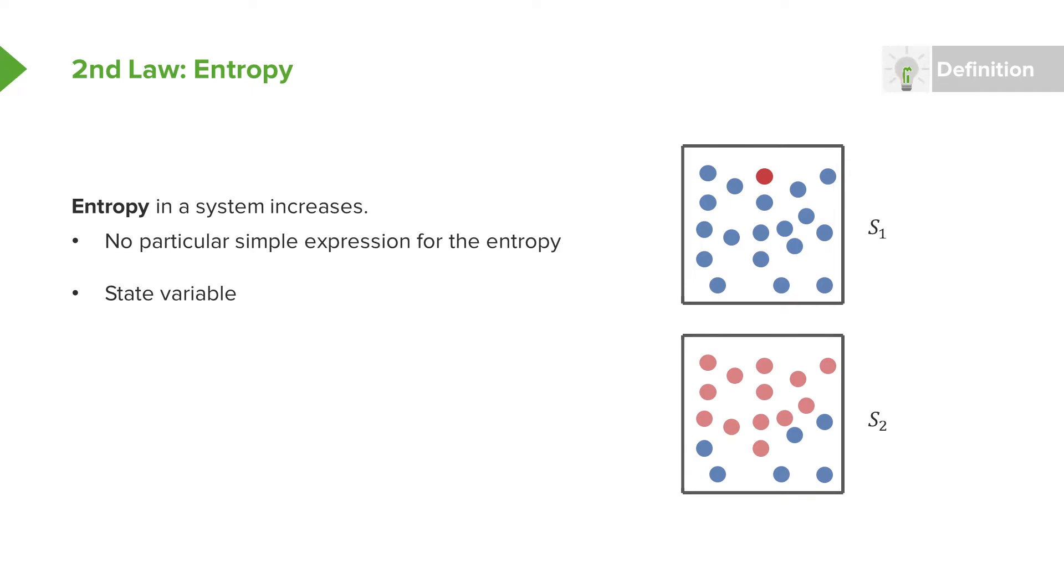Some other properties are that the entropy is also a state variable, which means it's not like the heat added to a system, where it could depend on the history and what you've done beforehand. It's something that could be measured in principle immediately just by looking at the system itself.